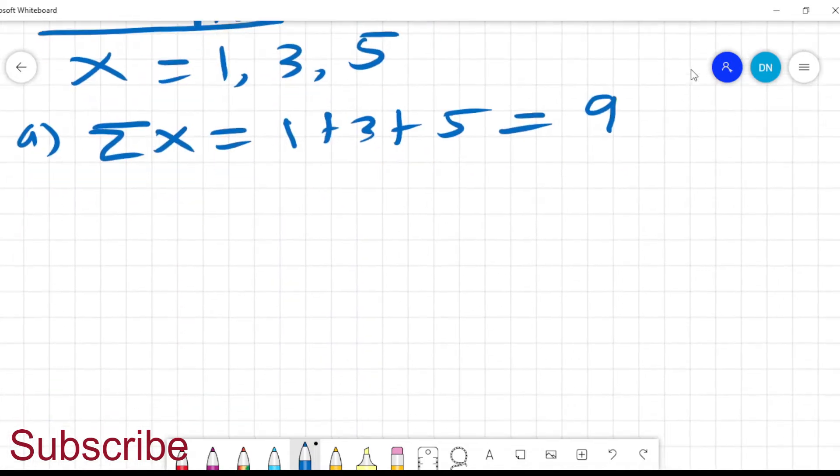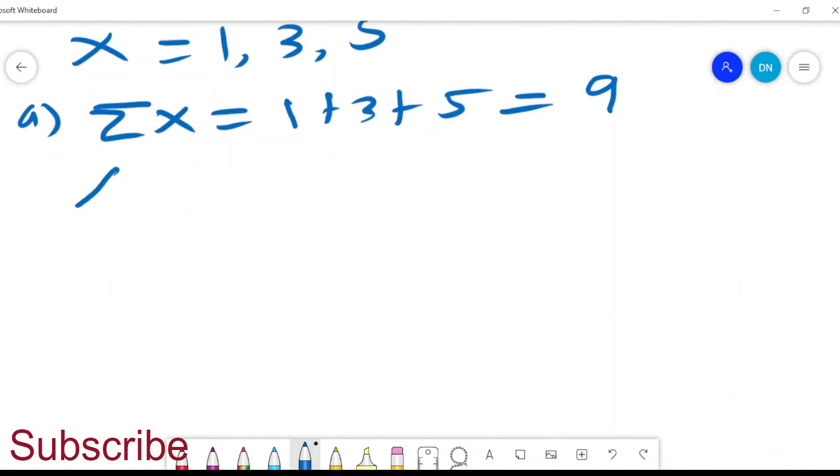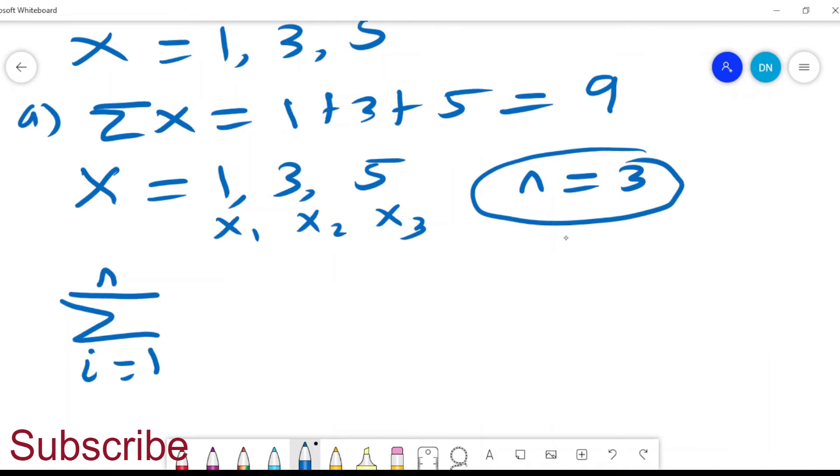Sometimes we may work in a different approach. If you look at this x, it has three values, so we can refer to these as x1, x2, and x3. You could also find this notation being used. Since there are three of them, I can say i equals 1 to n, where n is the number of values. n equals 3, and this is the number of values.